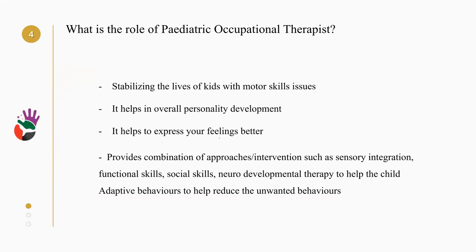What is the role of occupational therapy with Down syndrome, or pediatric occupational therapy? It's about stabilizing the life of kids with motor skills issues. The child with Down syndrome has hypotonia, so I want to stabilize his fine motor skills — for example, they will be affected — so I want to stabilize or improve his fine motor skills to help him perform different types of activity and by the end stabilize his life.